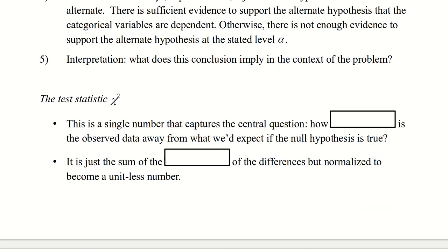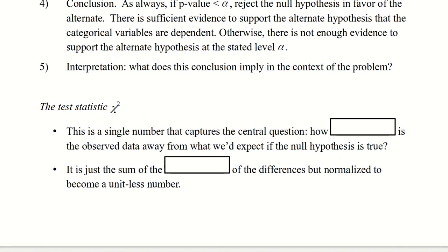The test statistic is chi-squared. Chi-squared is a single number that captures the most important part of independence. It asks how far is the observed data away from what we'd expect if the null hypothesis is true. Now, to do this, we just take the sum of the squares of the differences, but then we have to divide out the units, that is, normalize it to make a unitless number.